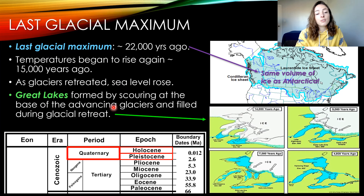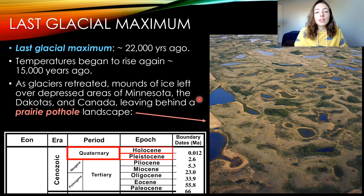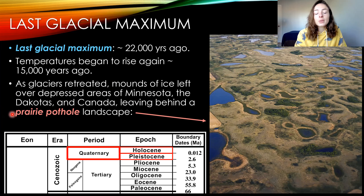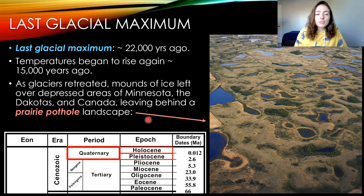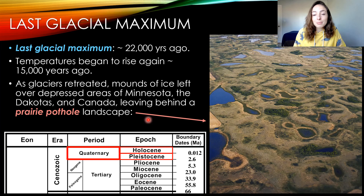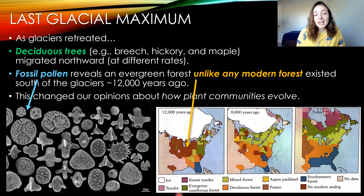Another thing these retreating glaciers caused was the Great Lakes — they formed and filled the Great Lakes as they retreated and melted back. We can still see quite a glacial landscape in certain areas of Minnesota, the Dakotas, and southern Canada, where glaciers left behind what are called prairie potholes. These potholes can be small ponds or marshes that have allowed many species of waterfowl to stop and rest during their seasonal migrations.